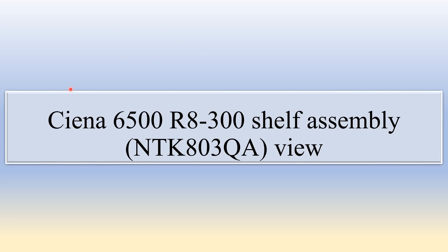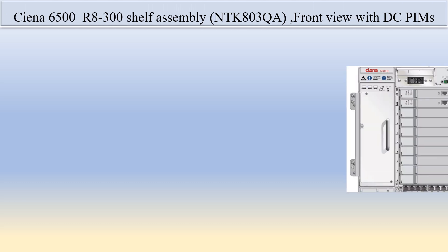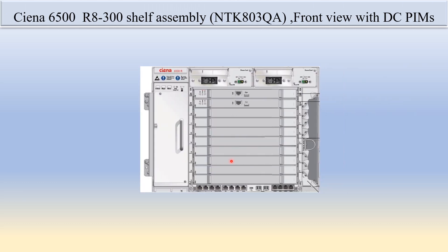Hello friends, today we will discuss the Ciena 6500 R8300 self-assembly whose pack code is NTK803QA. Here in this slide you can see the NTK803QA R8300 self-assembly view with the DC PIMS. PIMS here stands for power interface module. The power module used is the DC, that's why it's called the NTK803QA front view with the DC PIMS.